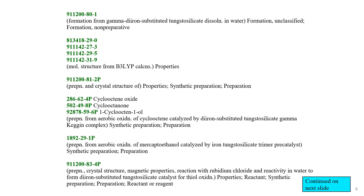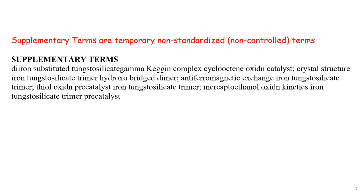This is a continuation of the previous slide — they list all the substances in the paper. The 'P' after the registry number means that substance was prepared in this study. At the end of each record in Chemical Abstracts, whether on STN or in SciFinder, you will see a paragraph of supplementary terms. As noted, these terms are not standardized and are not controlled terms. Even though it is so important to search for subjects by their standardized term, these supplementary terms are also part of the record.